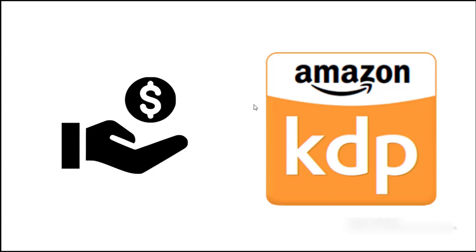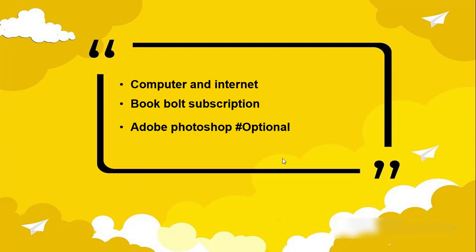The only thing you need to do is find a process, which is exactly what I'm going to show you during this tutorial. The only thing you require is a computer and internet. Software subscriptions are optional — if you want to automate your book publishing you can purchase software like Book Bolt or KDPA, but you really don't need any money to start on Amazon KDP. You can start with a zero dollar budget.